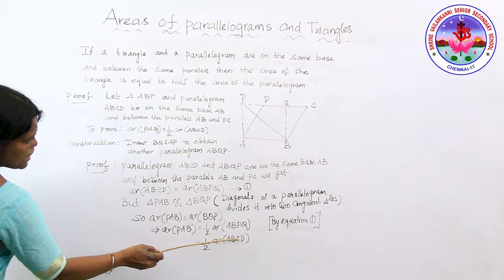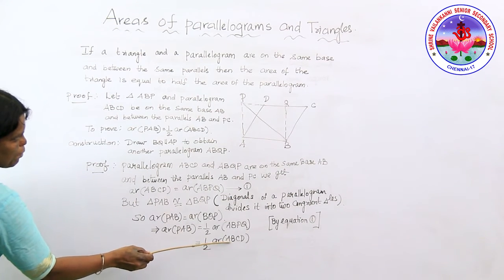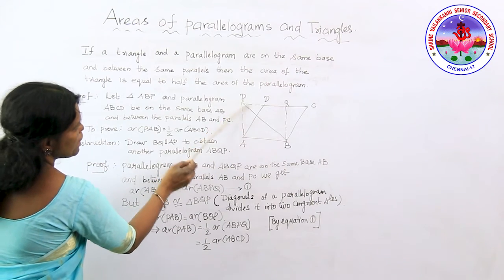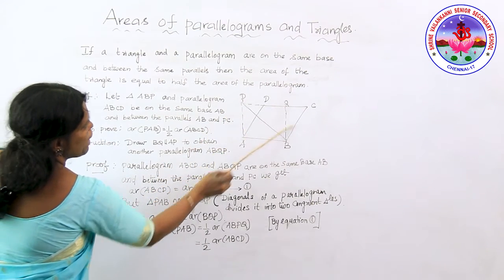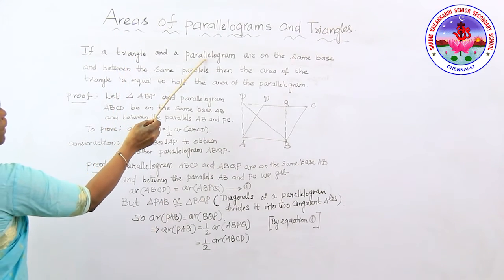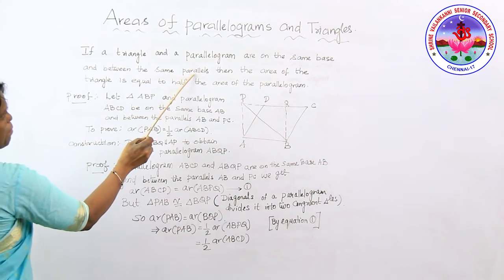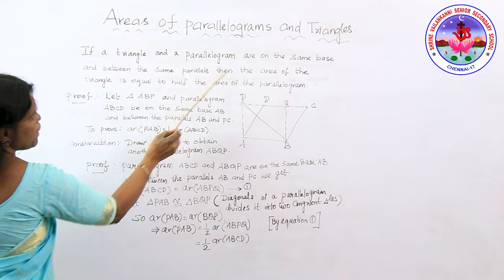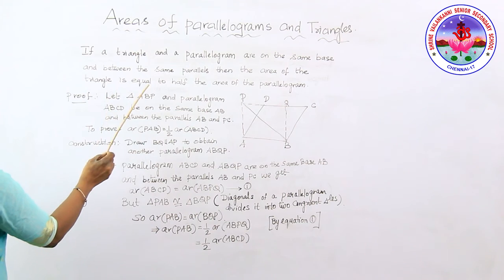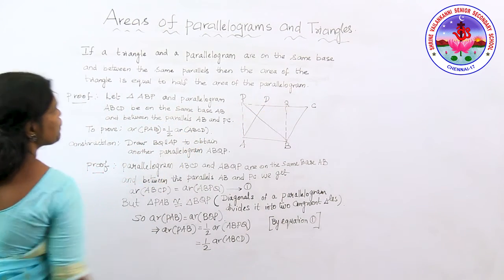Thus I have proved that area of triangle PAB equals half of parallelogram ABCD, satisfying the theorem: a triangle and a parallelogram on the same base and between the same parallels have the area of the triangle equal to half the area of the parallelogram.